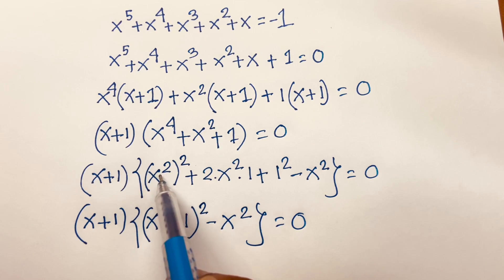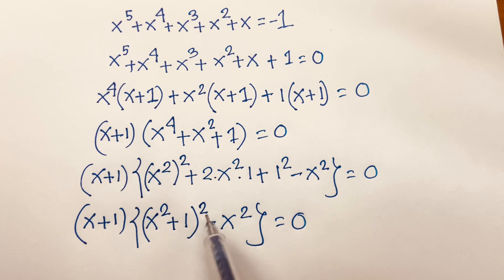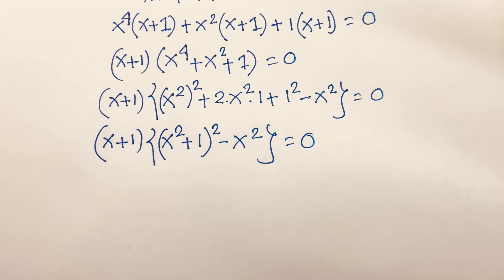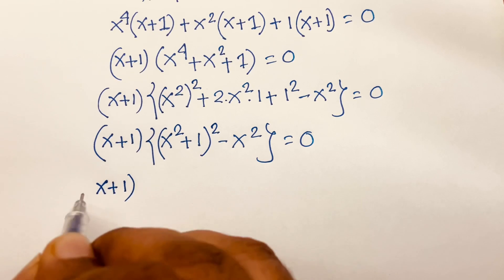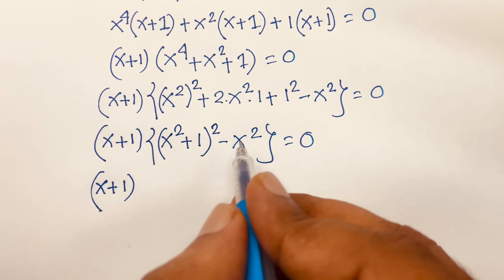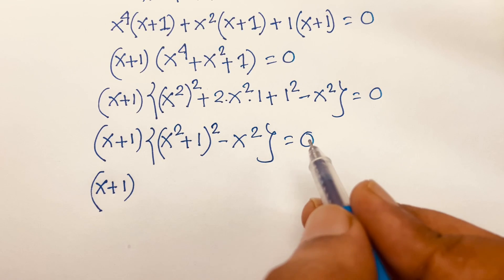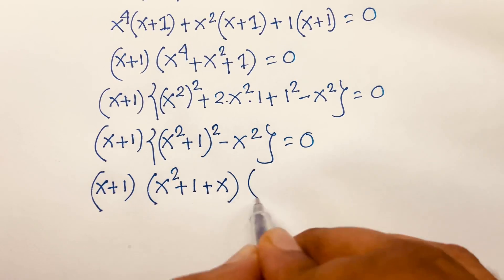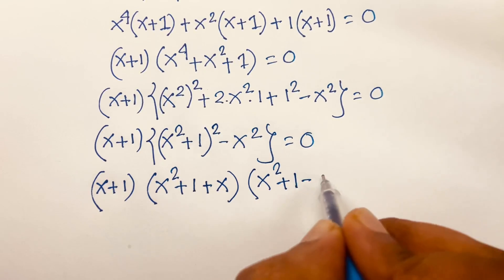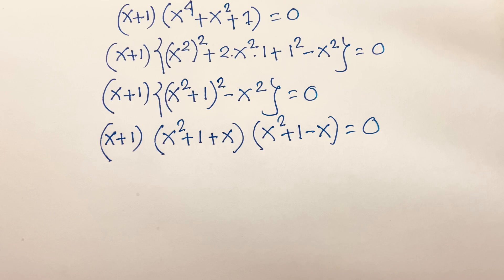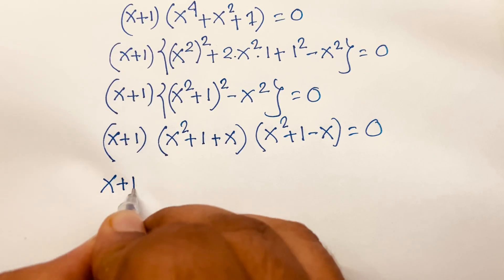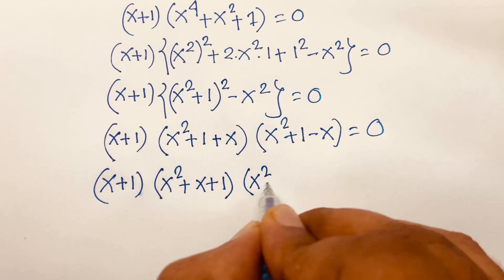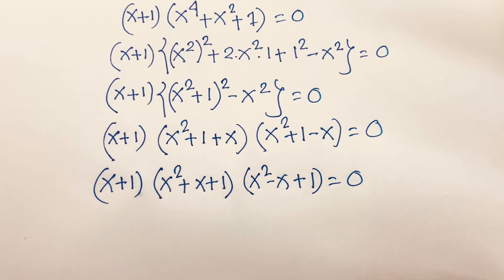Using the difference of squares identity — a² minus b² equals (a + b)(a - b) — where a = (x² + 1) and b = x, this factors as (x² + 1 + x)(x² + 1 - x) = 0. So we get (x + 1)(x² + x + 1)(x² - x + 1) = 0.